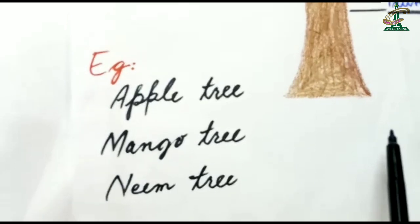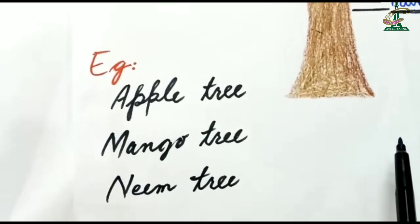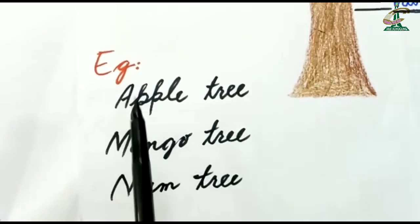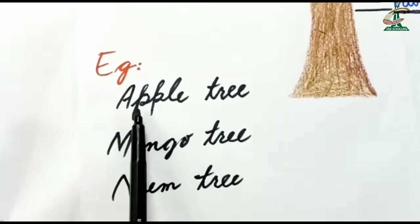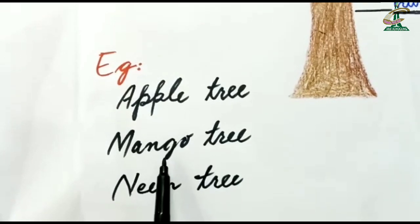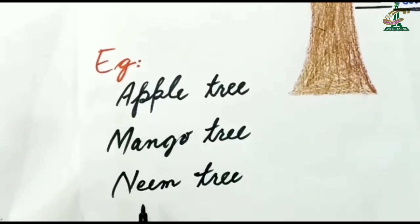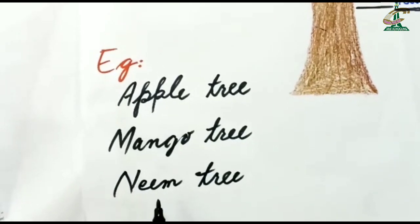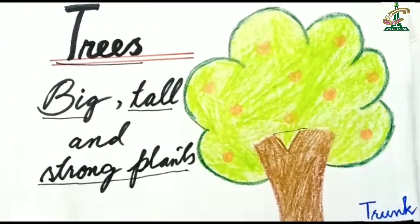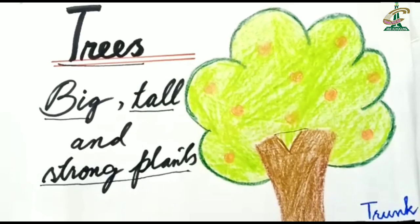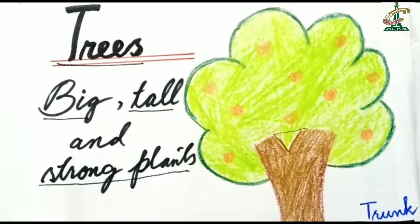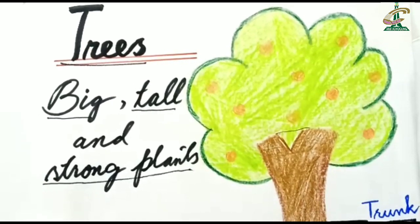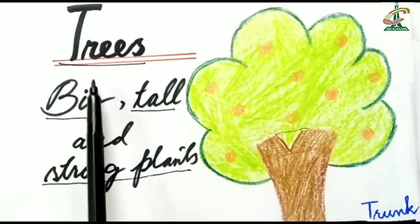Students, you must have seen many trees. The examples of trees are apple tree, mango tree and neem tree — you all must have seen a neem tree. So what did we learn today? We learned that big and strong plants are called trees.